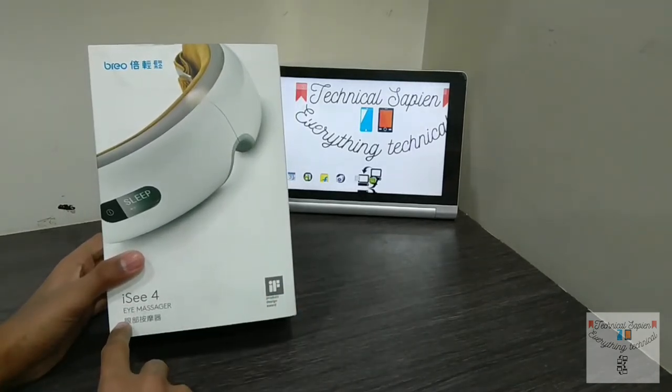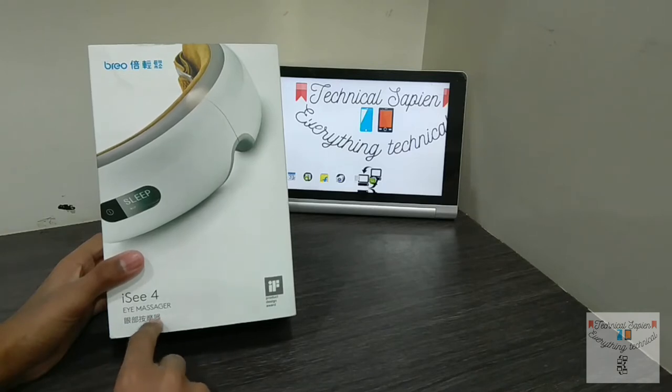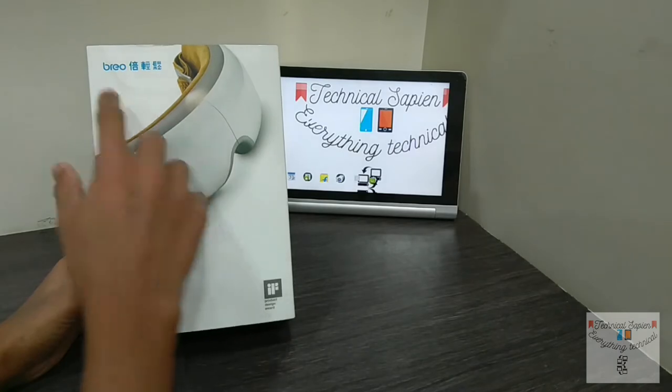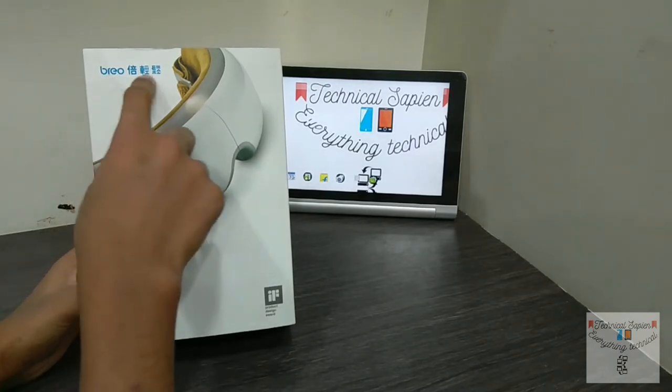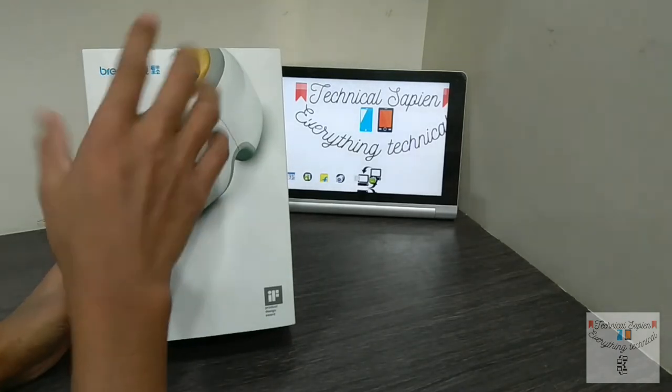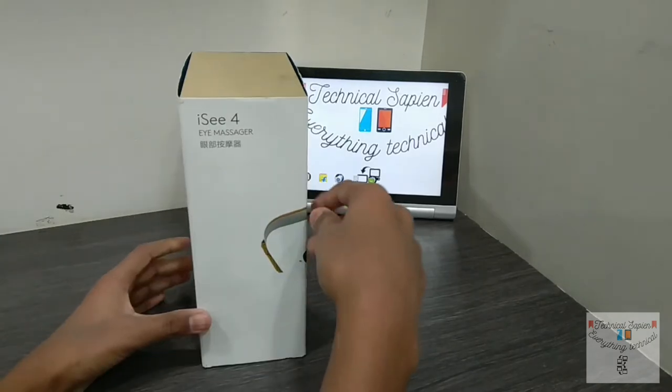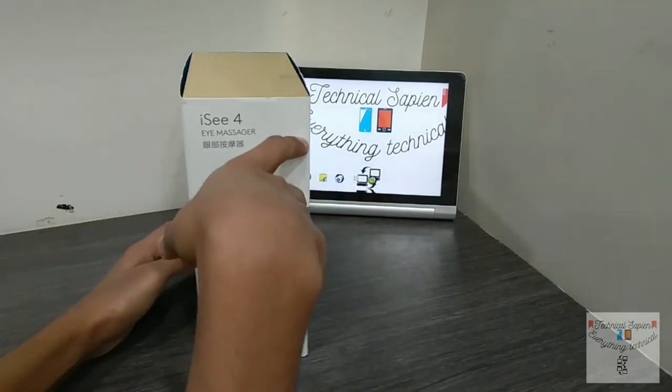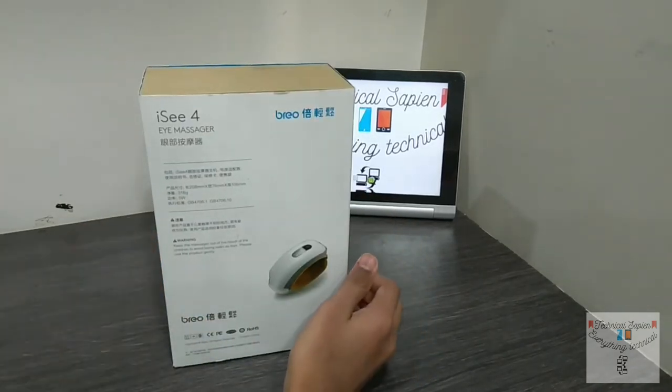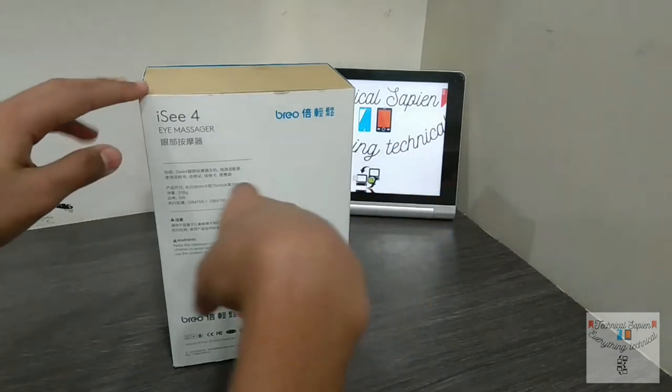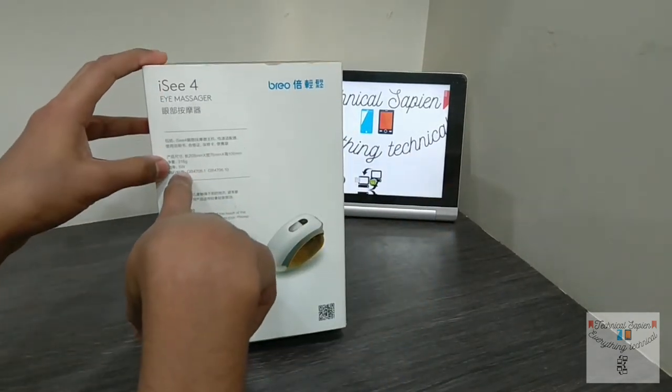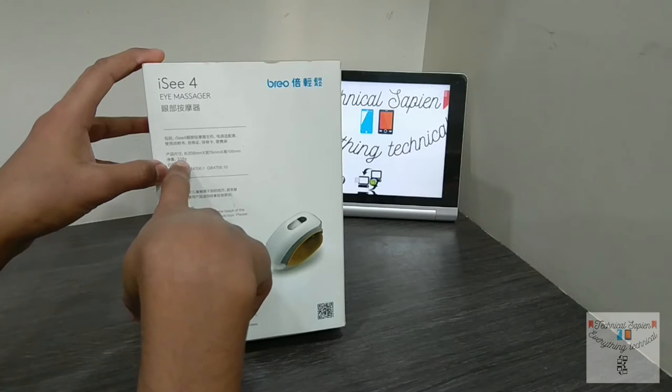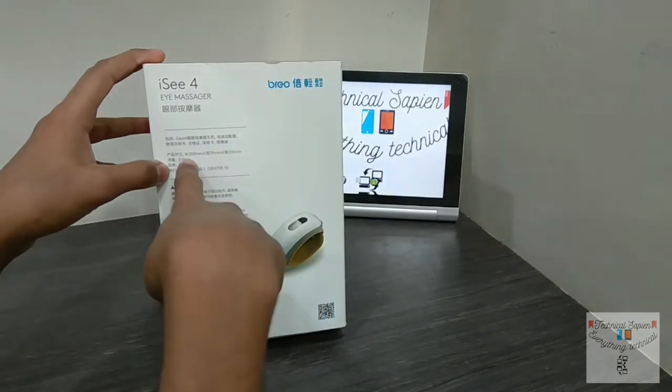Here down you can see it's written as IC4 Eye Massager, something written in Chinese, it must be the name of that gadget. Here it's written as Brio, and here it's written in Chinese. Brio on the left side also, there's this IC4 Eye Massager.